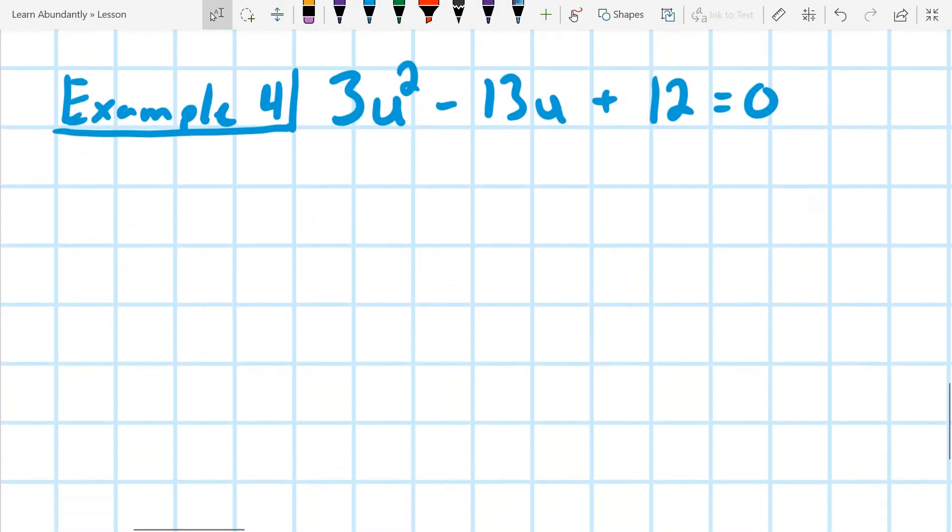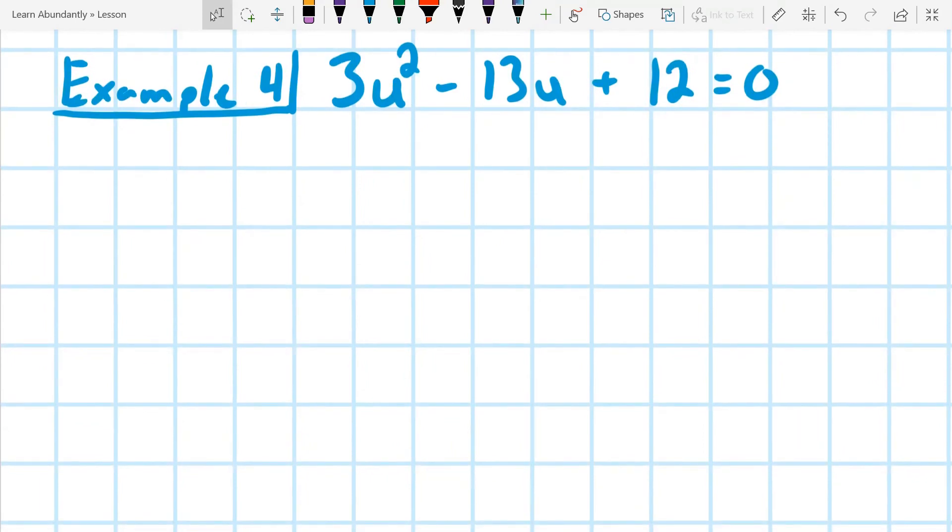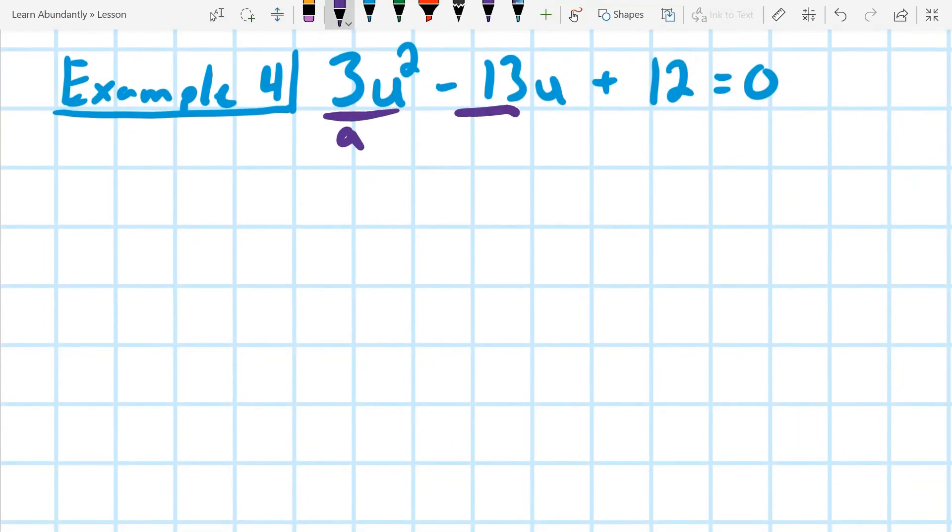Again, we have an a, a b. This time notice that b is negative, and our c, which is just 12. We're going to go ahead and multiply 3 times 12 to get our AC, and that's 36.